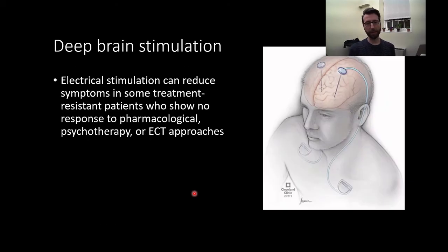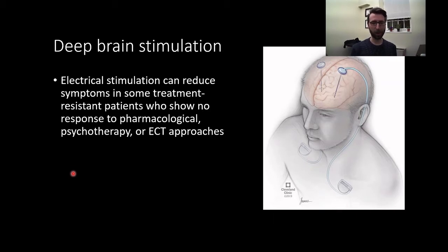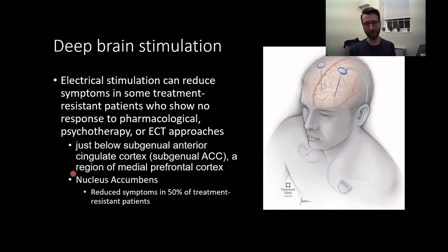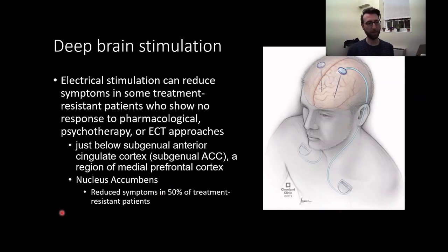Another method is deep brain stimulation, where indwelling electrodes are permanently installed in an individual. Electrical stimulation can then reduce symptoms in some treatment-resistant persons who show little to no response to pharmacological, psychotherapy, or ECT approaches. It's a very invasive approach — this is brain surgery. Electrodes can be placed in regions like just below the anterior cingulate cortex, called the subgenual ACC, which is a region of the medial prefrontal cortex, or within the nucleus accumbens. We see reduced symptoms in 50% of treatment-resistant patients using deep brain stimulation.